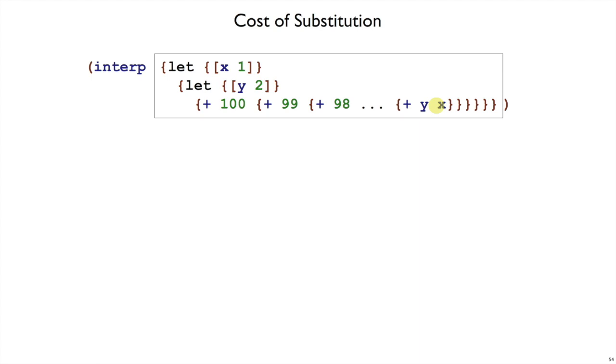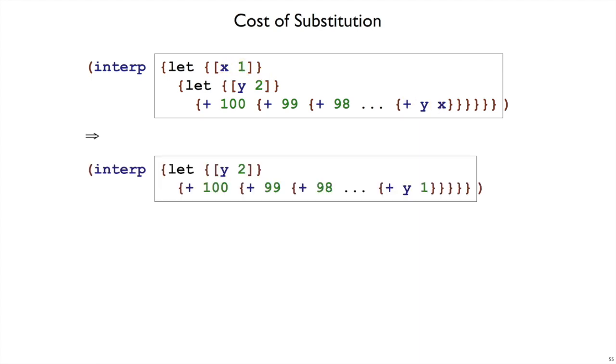In order to interpret this expression, we will need to evaluate the 1, and then replace all the x's with 1. So somewhere along the way we'll get to something like interp, this let y, etc. But to build up this second expression, to get a 1 here instead of an x, we had to rebuild all of the plus expressions that are around it. That's what subst and recursive calls to subst will do.